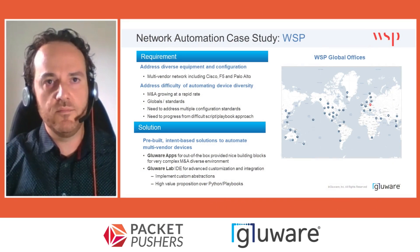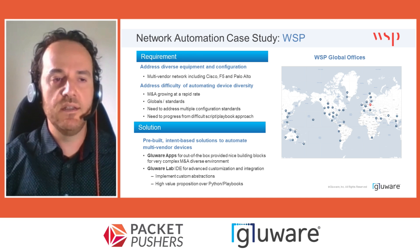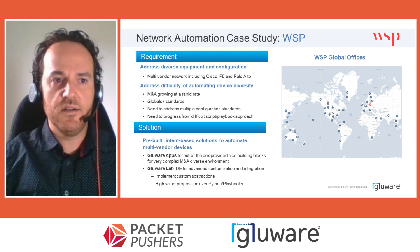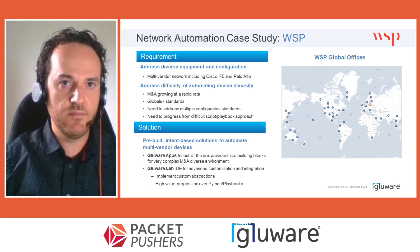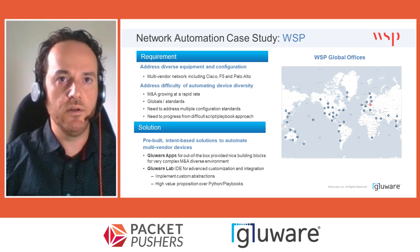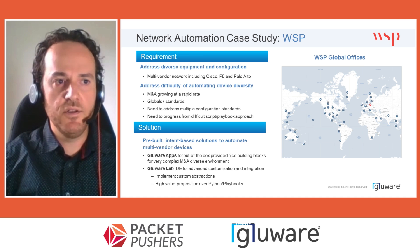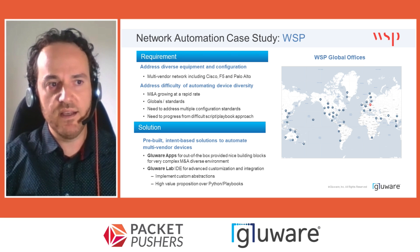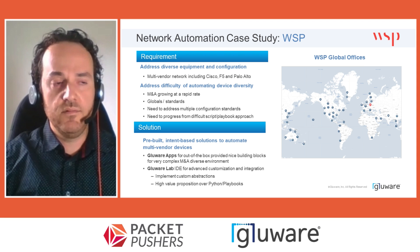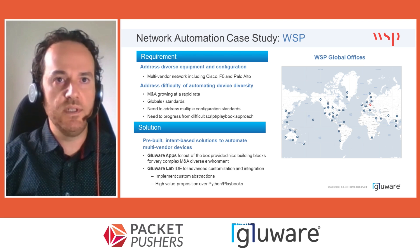Network configuration and change management is one of those baseline requirements you absolutely have to get right. As a global company, each management process is very complex with many layers of approval. With an automation platform, you want to make sure the end state actually correlates with what you want to achieve. One thing Glueware is very good at is knowing exactly how a change is executed — it thinks like a network operator and knows exactly what the end state should be.